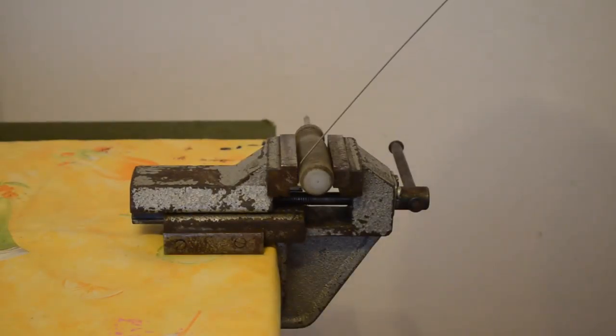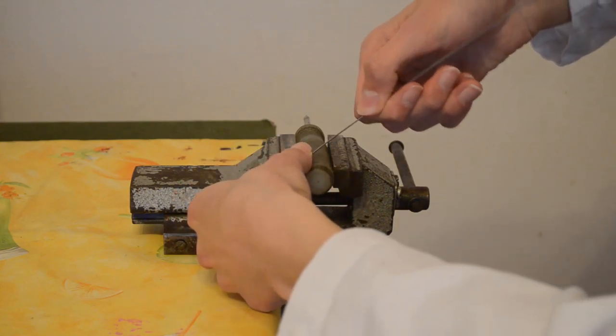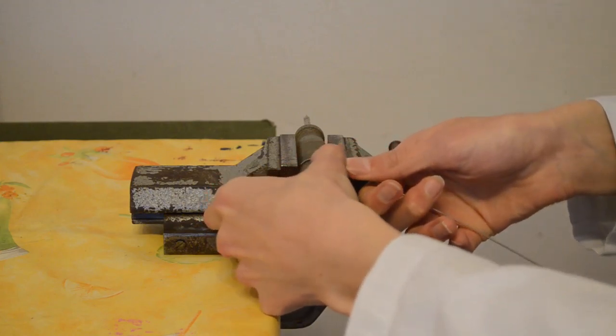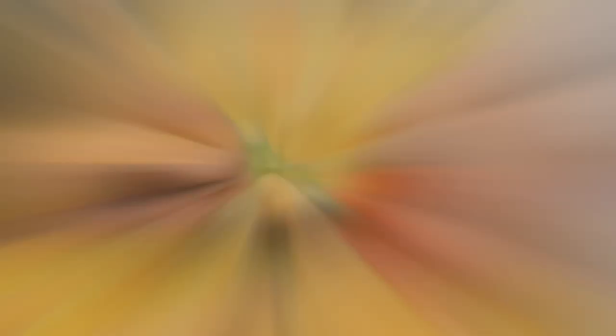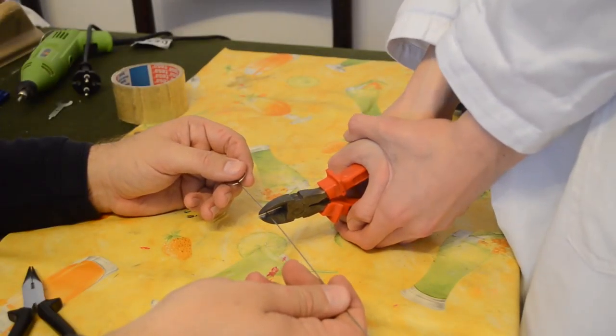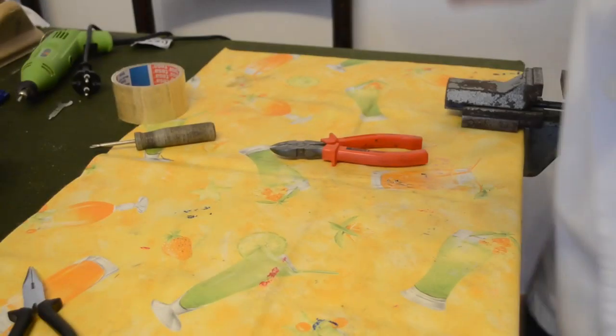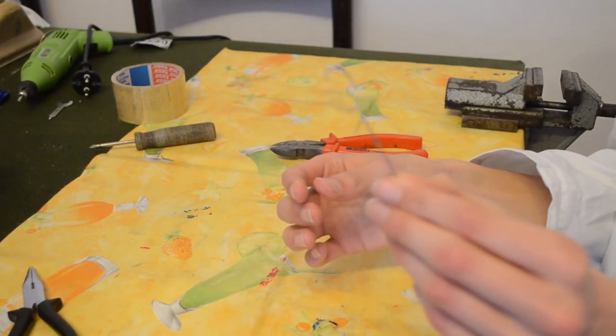Now to make the anode wire. And that's the anode. And now bending the cathode wire.